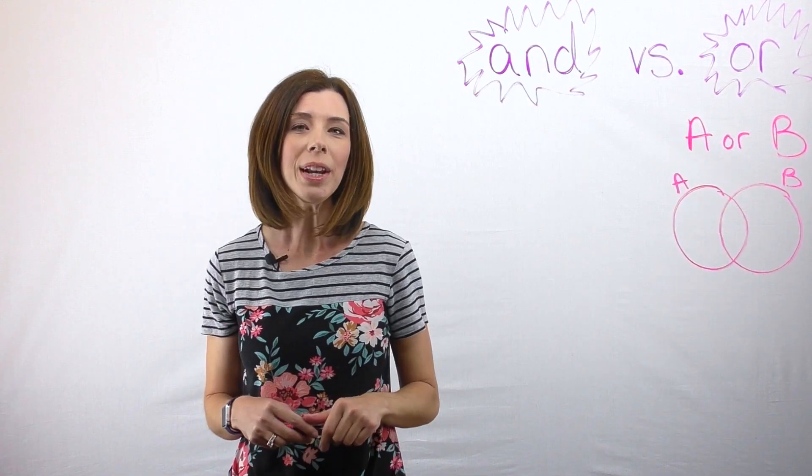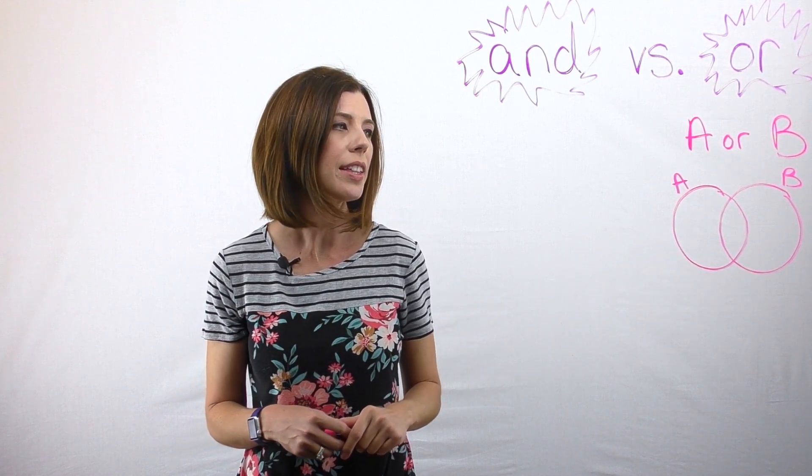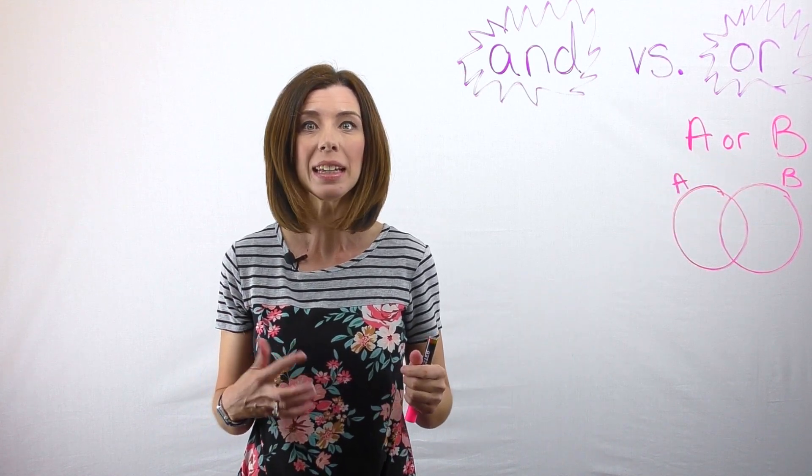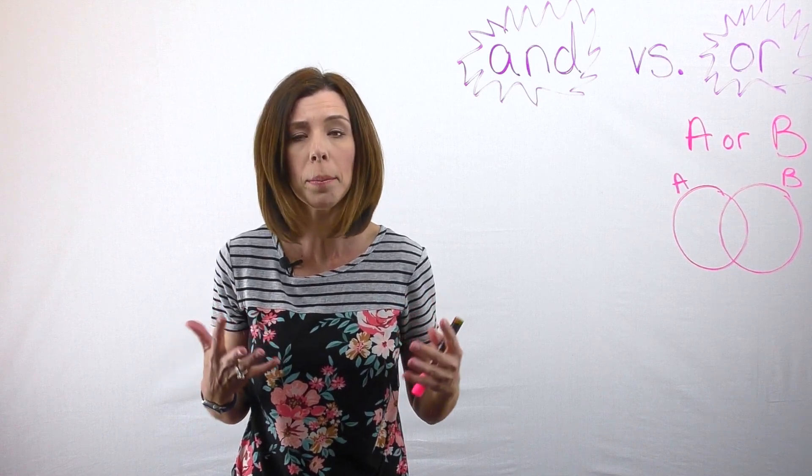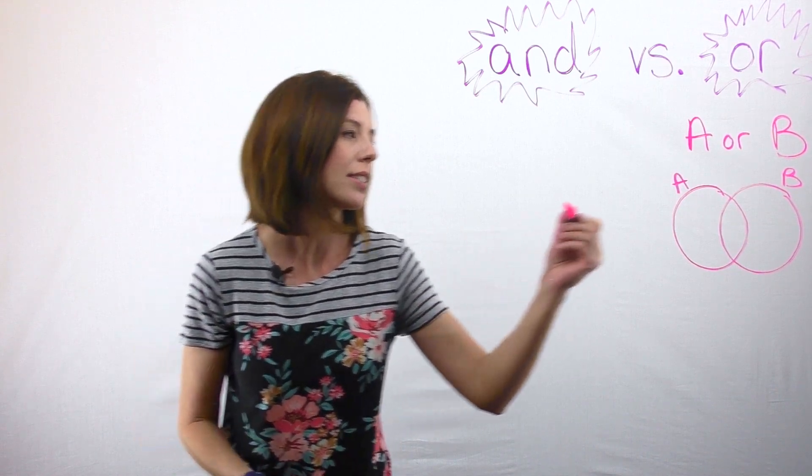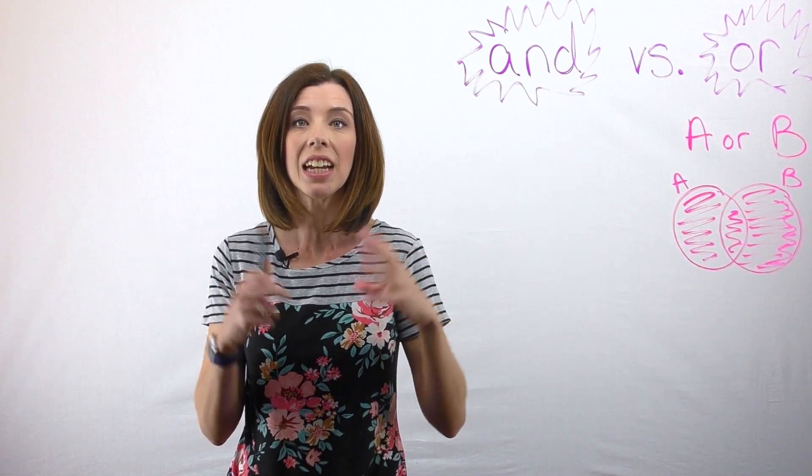Let me show you what that looks like on a Venn diagram. When I use the word or in mathematics, I'm going to have a Venn diagram that looks like this. And I could say A or B, and I'm literally talking about it can be either A or B in an inclusive setting. So when I shade it, it's going to look like this. I'm literally shading all of it because it's an inclusive setting.